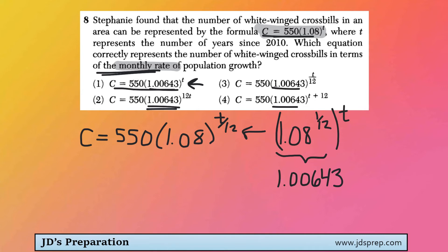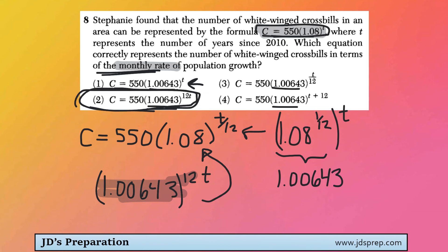Option number 2 is actually the correct answer. The reason being, if we took 1.00643 to the power of 12t, and you calculated 1.00643 to the power of 12, you would revert back to 1.08. So this gives you the same original equation. All we're doing is writing it in terms of the monthly rate instead of the yearly rate. That would be it for this video, thanks for visiting JD's Preparation.